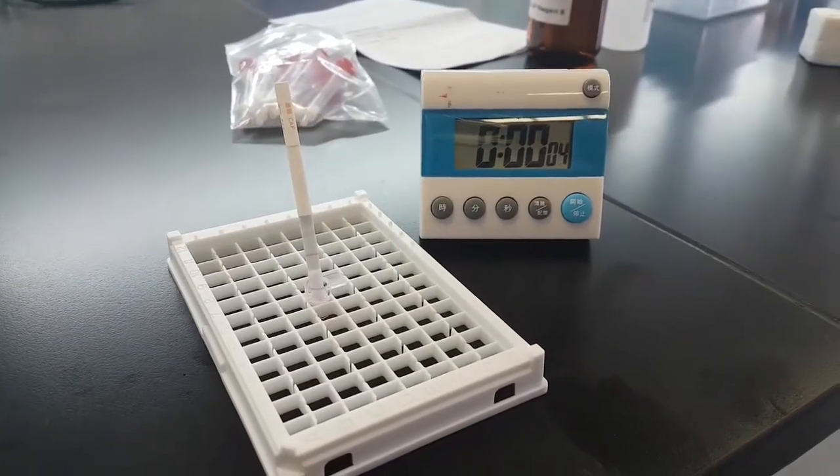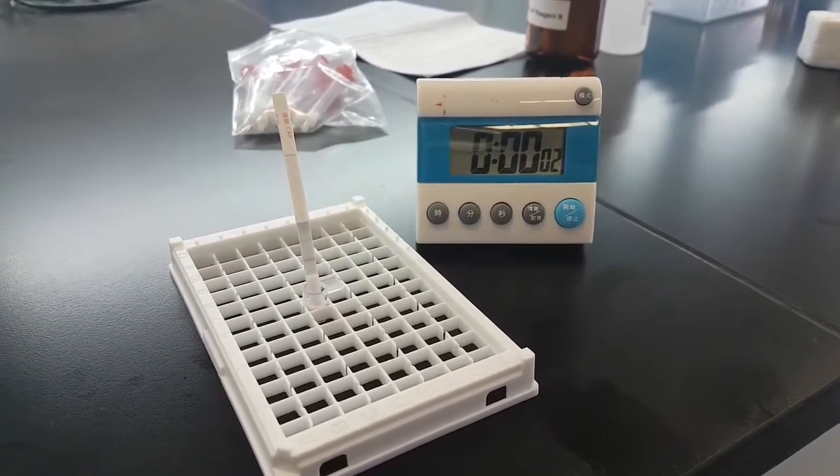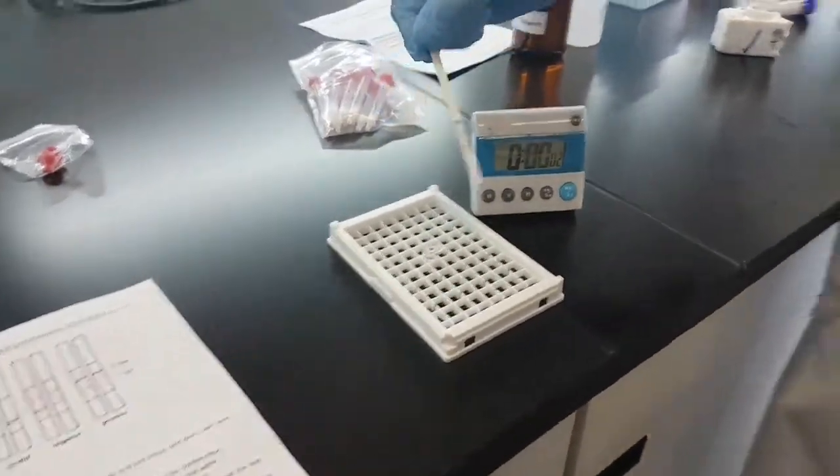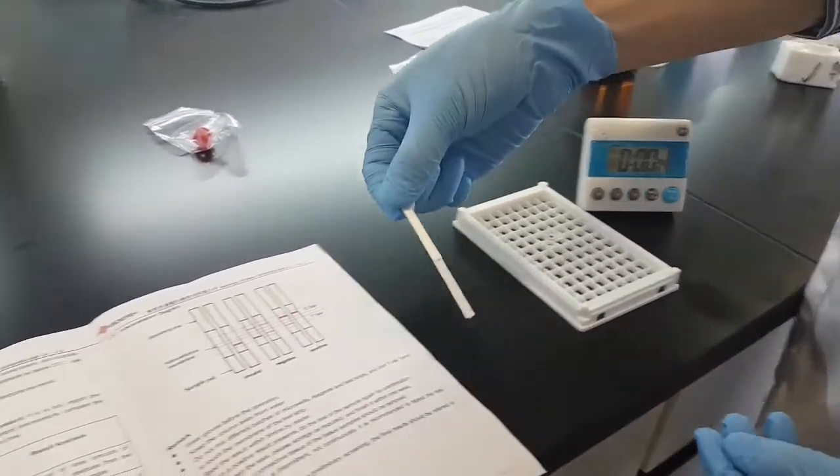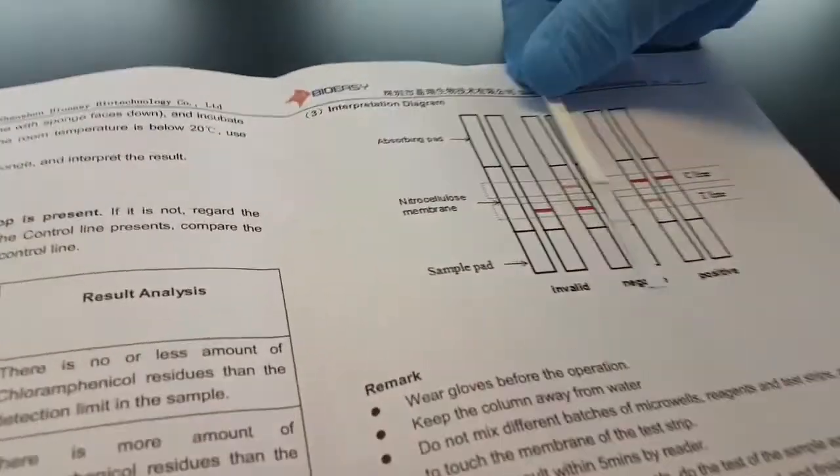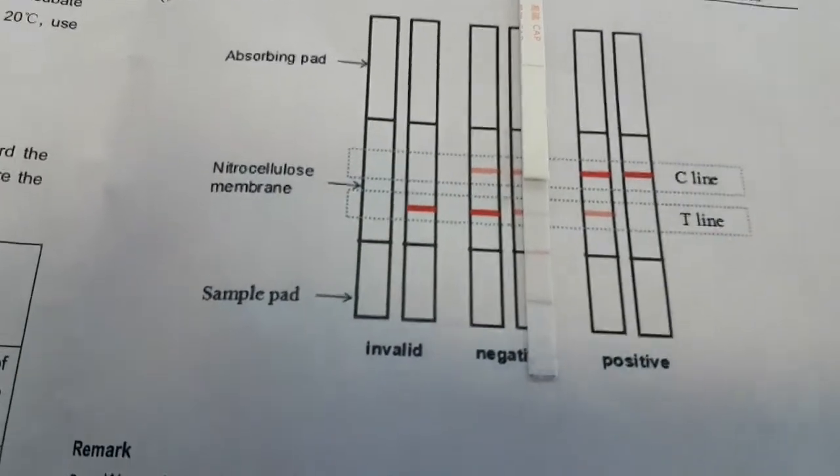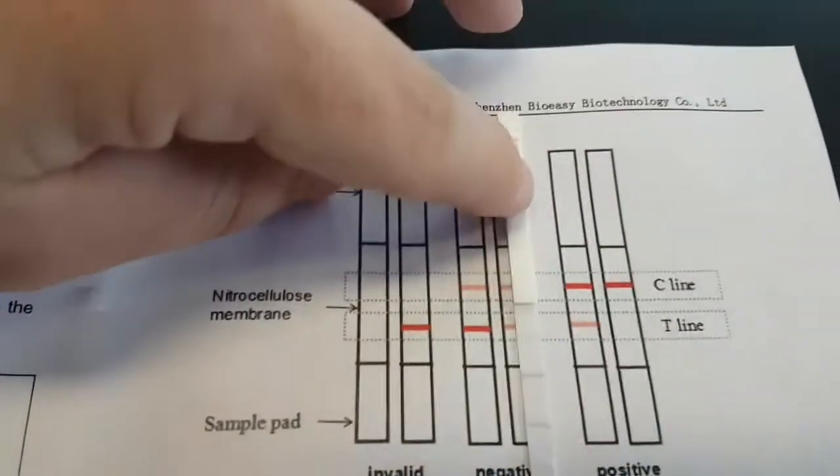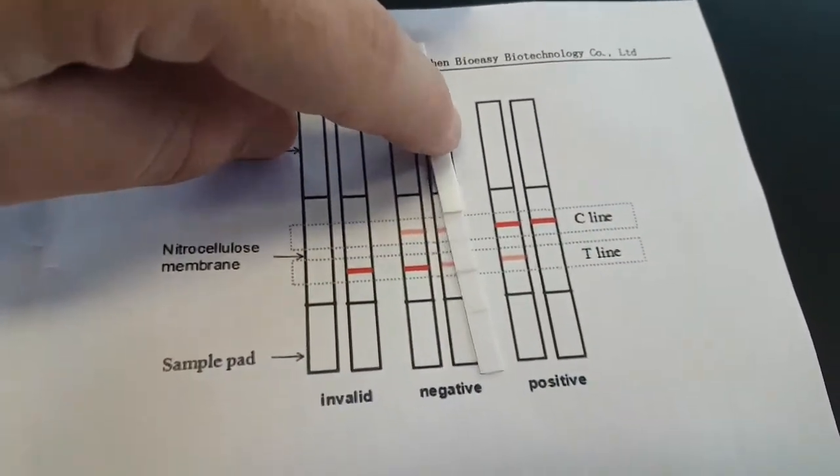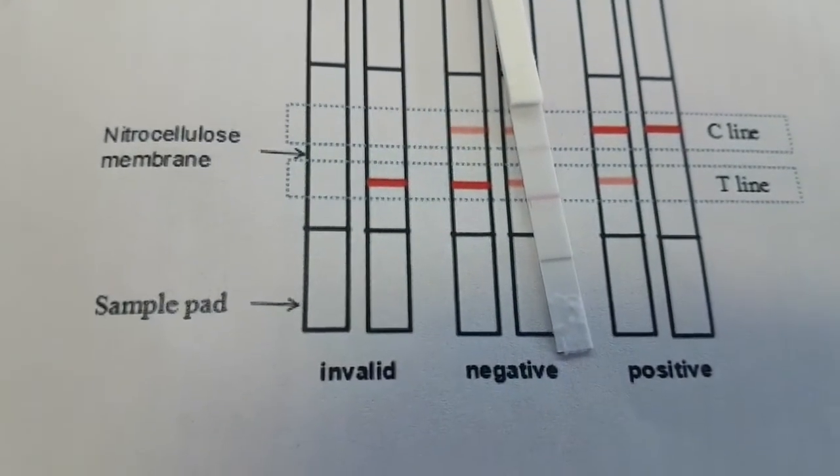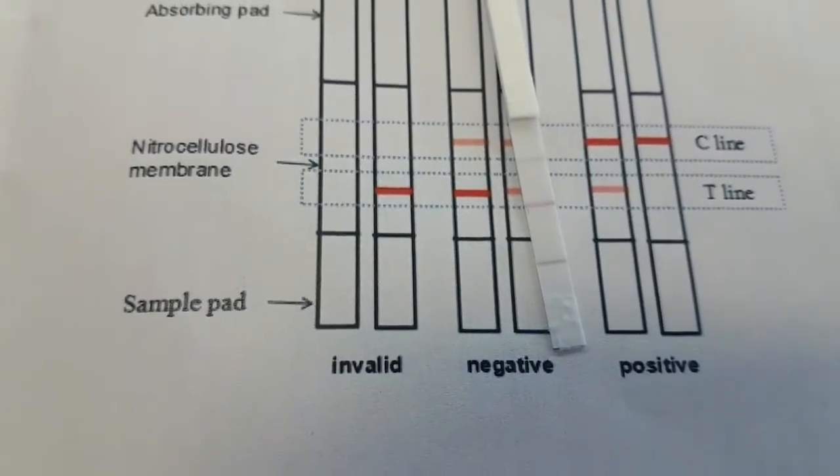All right, so the second incubation has finished. Now what we are going to do is take out the test strip, remove the sample pad, and compare it. As we can see here, this is a negative result in terms of our levels of detection.